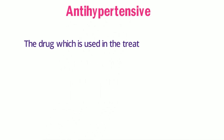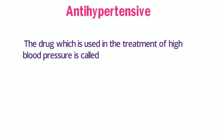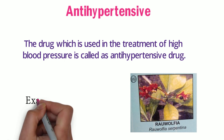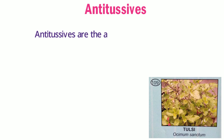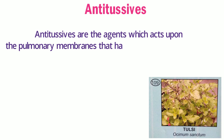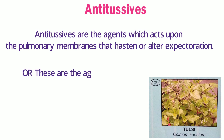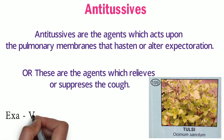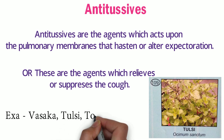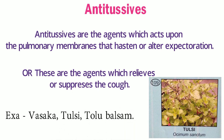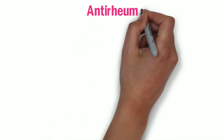The drug used in the treatment of high blood pressure is called an anti-hypertensive. An example is Rauwolfia. Anti-tussives are agents which act upon the pulmonary membranes to hasten or alter expectoration, or agents which relieve or suppress cough. Examples include vasaka, tulsi, and tolu balsam.